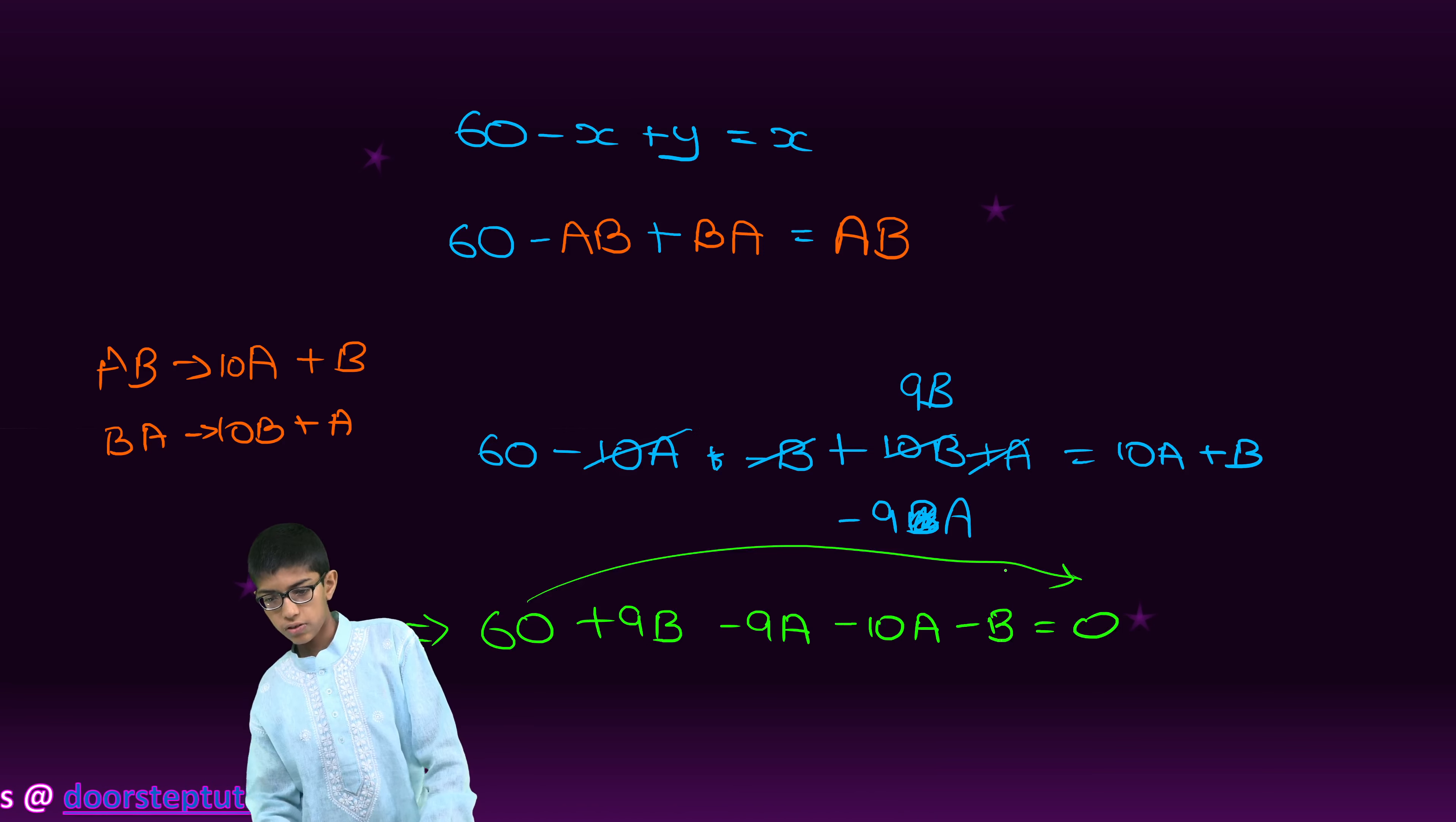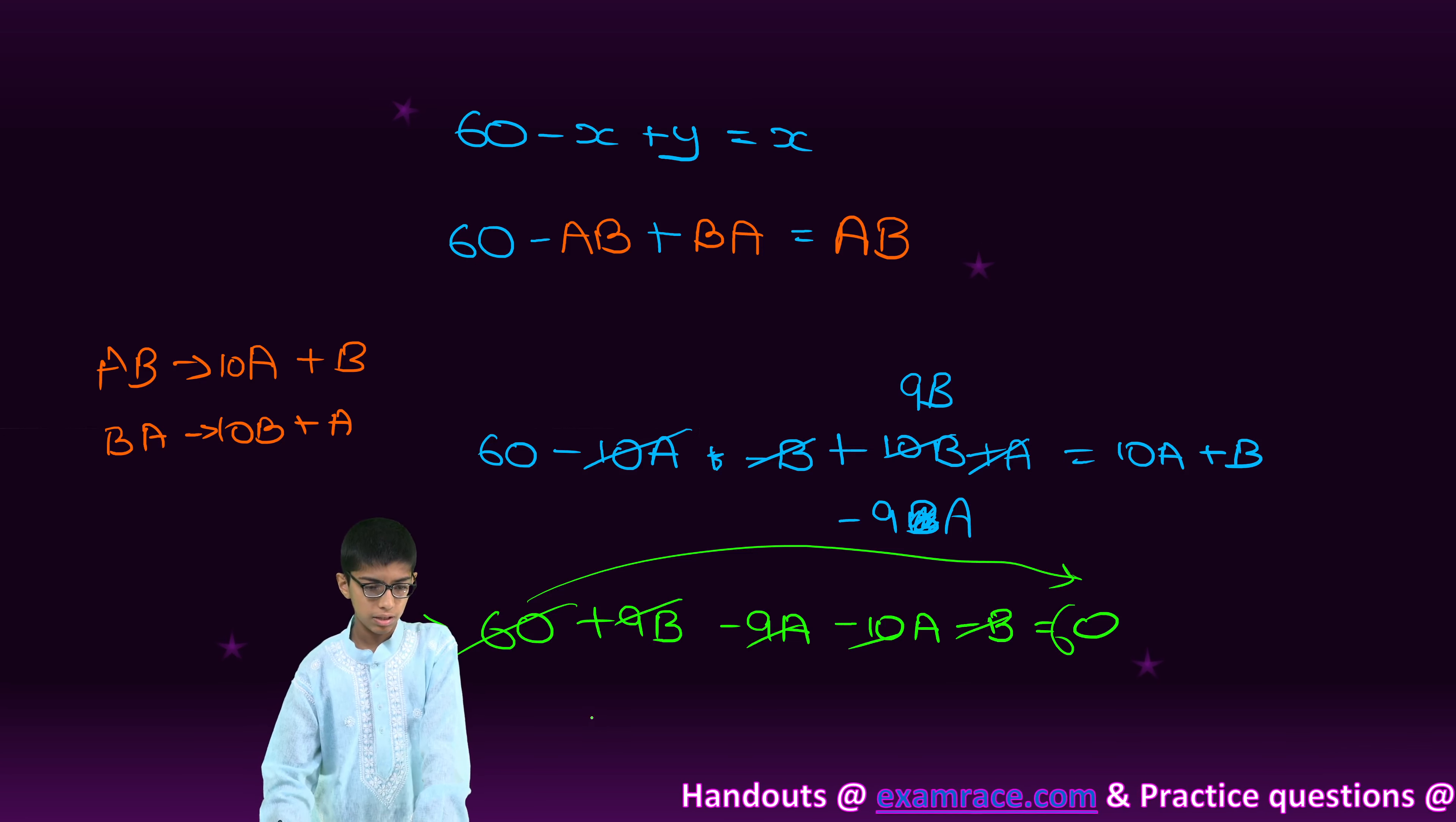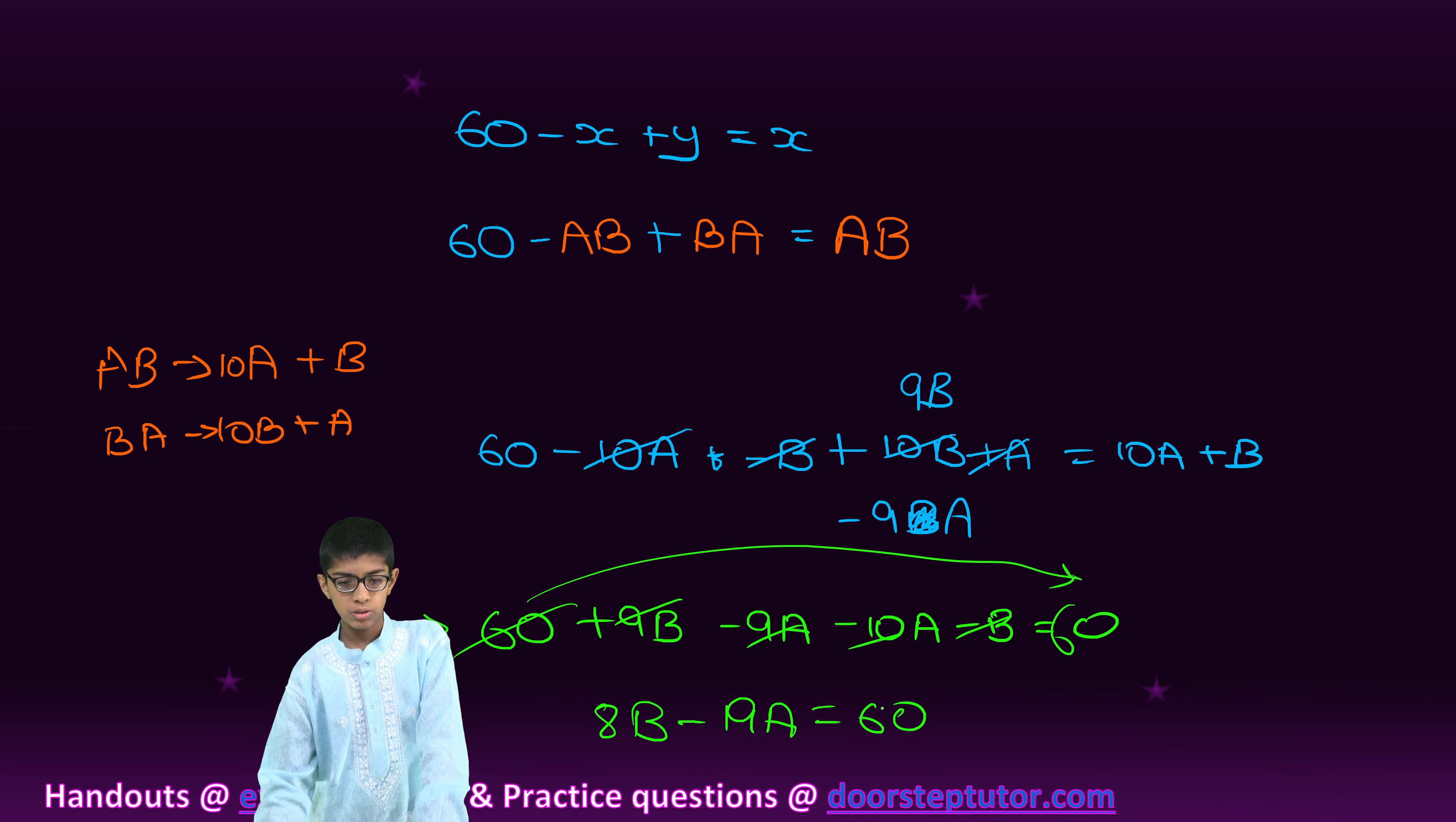That is 60 plus 9B minus 9A minus 10A minus B equals 0. Now, 60 we will bring to this side. So, 9B minus B is 8B and this is minus 19A. So, 8B minus 19A is equal to 60.